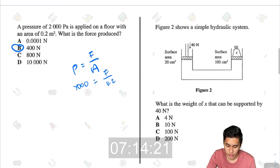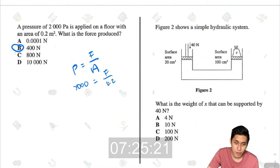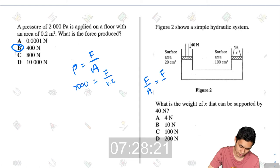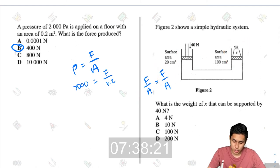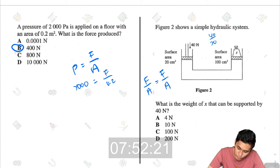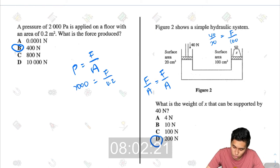Figure 2 shows a simple hydraulic system. What is the weight of X that can be supported by 40 Newtons? Using Pascal's principle for a hydraulic jack, the simple formula would be F over A equals F over A. Whereby the first FA would be for one of the pistons and the other one would be for the other piston. So 40 divided by 20 equals the maximum force divided by 100. Multiply by 100, I'll get 200 Newtons. Answer D.